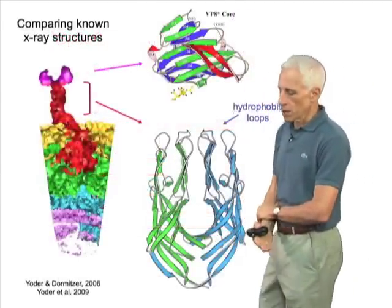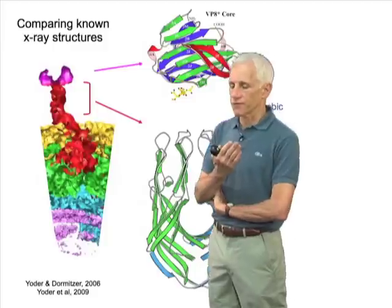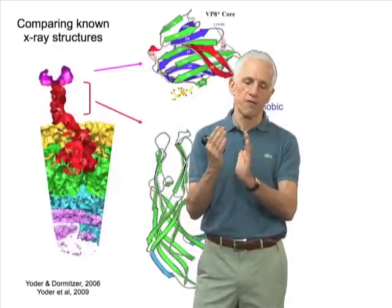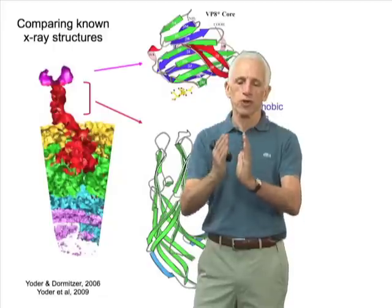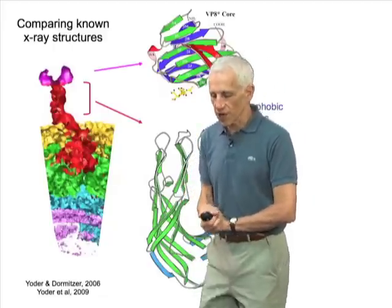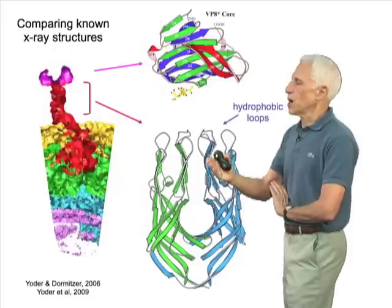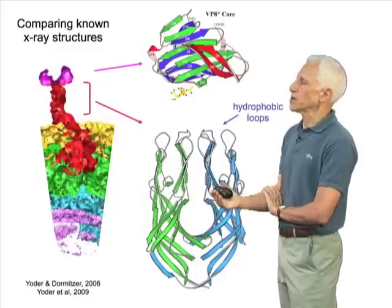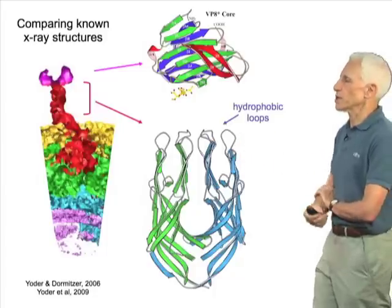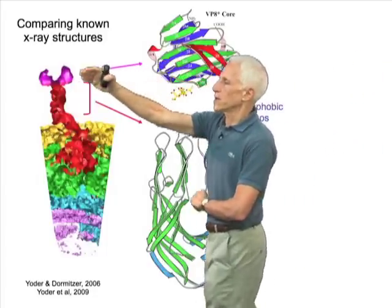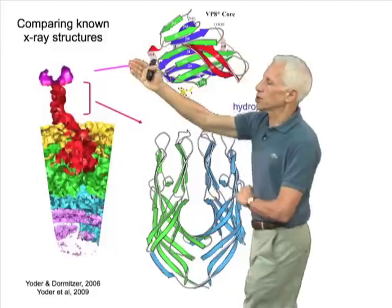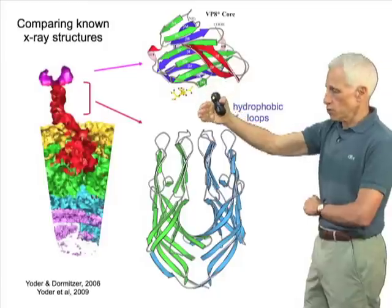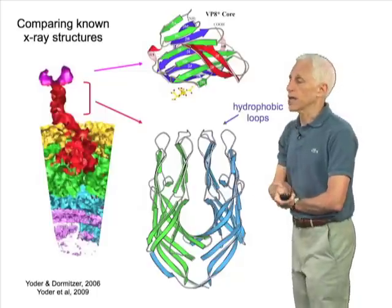Comparing the spike regions—which in three-dimensional reconstruction from electron micrographs are not quite as well ordered because of some slight flexibility as these structures stick out from the virus—we can fit them very well with known X-ray structures. An X-ray structure of the bean-shaped domain shows a nice dimer with hydrophobic loops at the tips that we'll talk about.